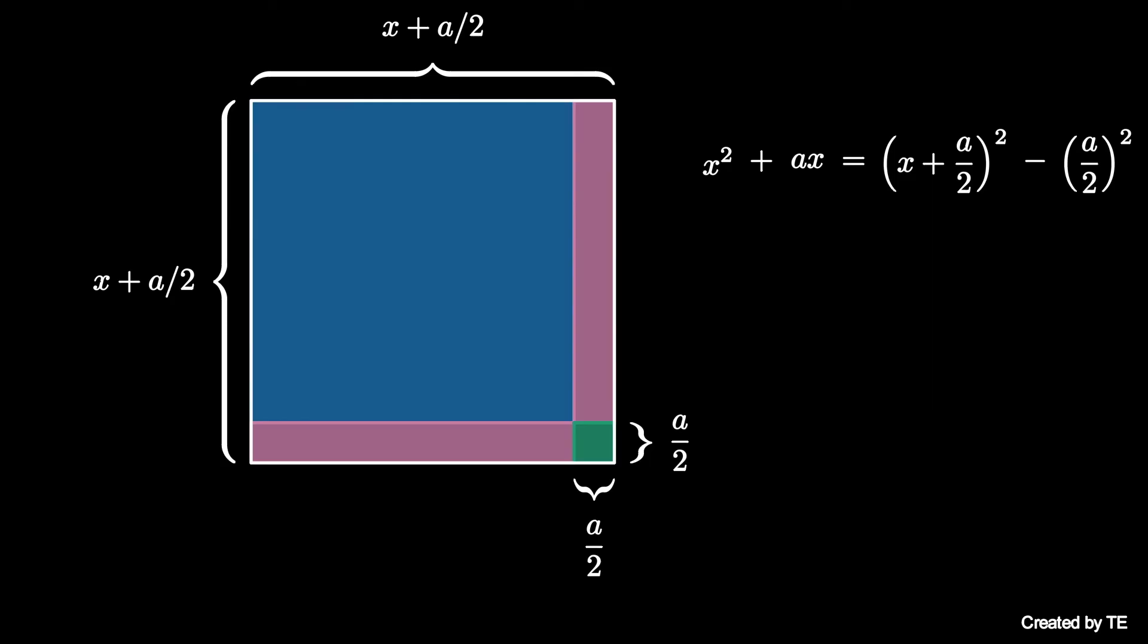Converting x squared plus ax to the form x plus a over 2 squared minus a over 2 squared is called completing the square.